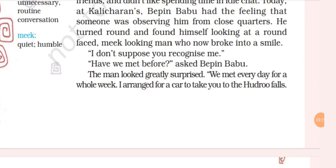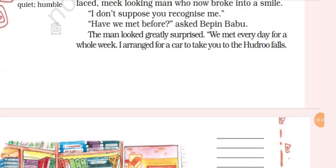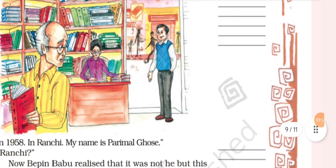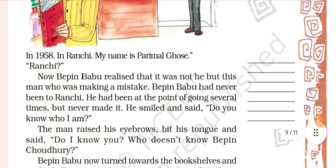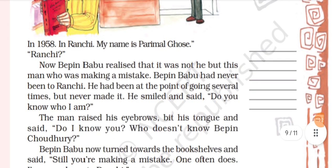'I don't suppose you recognize me. Have we met before?' asked Vipin Babu. The man looked greatly surprised. He said, 'We met every day for a whole week. I arranged for a car to take you to Hoodru Falls.' Now in the picture you can see Vipin Babu buying books and behind him stands the man who was observing him. In 1958 in Ranchi — 'My name is Parimal Ghosh,' the man said.